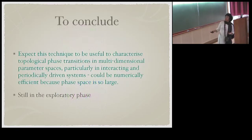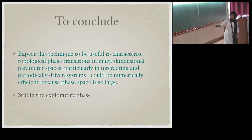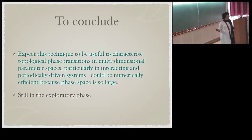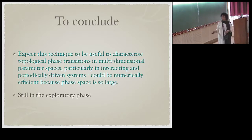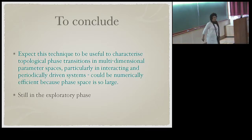In summary, we expect this technique to be useful in the long run for characterizing topological phase transitions in multi-dimensional parameter spaces, particularly for interacting systems and periodically driven systems where it could be numerically efficient — you only need to compute at nearby points using the RG equation rather than over all of parameter space. The method is still in an exploratory phase and needs more understanding, but it seems promising.